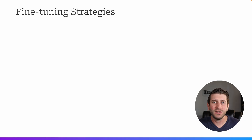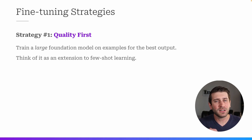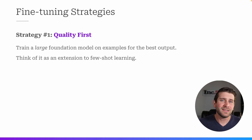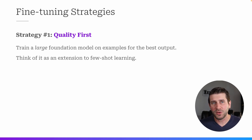So here are two fine-tuning strategies to keep in mind. The first strategy is going all out on quality. In this scenario, you take the largest possible foundation model and train it on your examples to get better output. Think of it as an extension to few-shot learning — if you can provide a couple of examples in the prompt, but it starts to get longer and longer, just move those into a training data set, fine-tune a model, and now your model has been trained on your examples and it's going to do a better job.